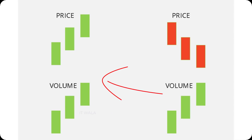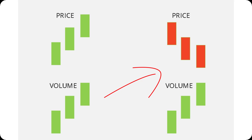Here, the price and volume are both going up, which means the uptrend of the price is strongly bullish. Whereas here, the price is going down but the volume is going up, which means the downtrend of the price is strongly bearish.